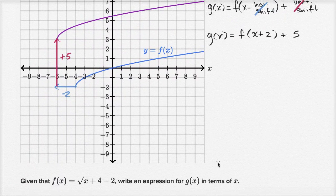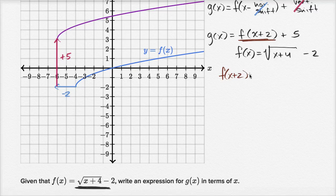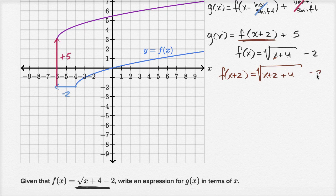But they asked us to write an expression for g of x in terms of x, so we're actually going to use the definition of f of x. We know f of x equals the square root of x plus four minus two. So what is f of x plus two? Everywhere we see an x, we replace it with x plus two: square root of x plus two plus four minus two, which equals the square root of x plus six minus two.